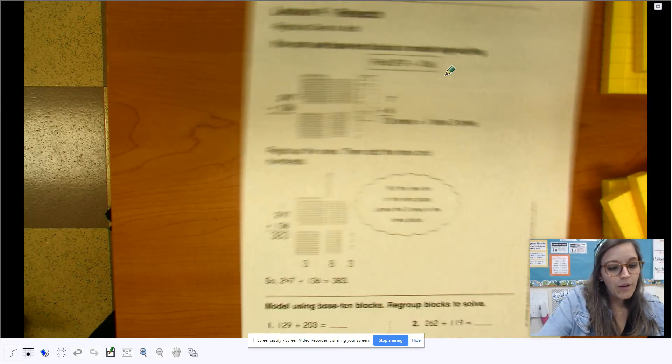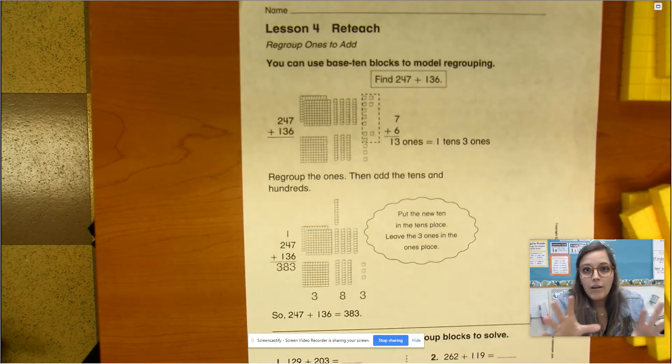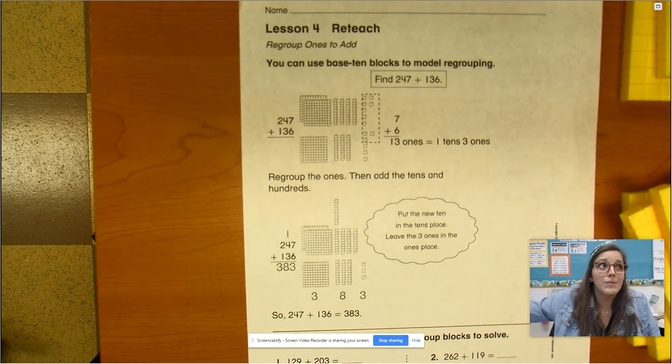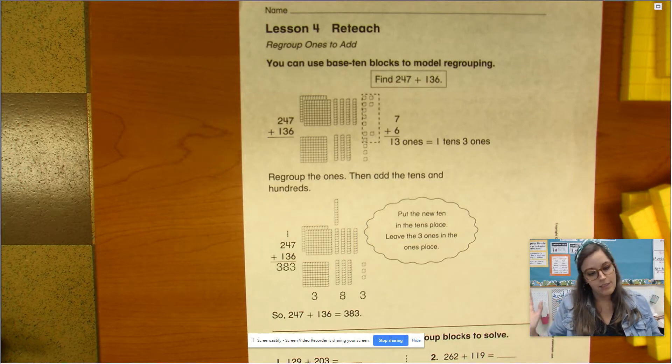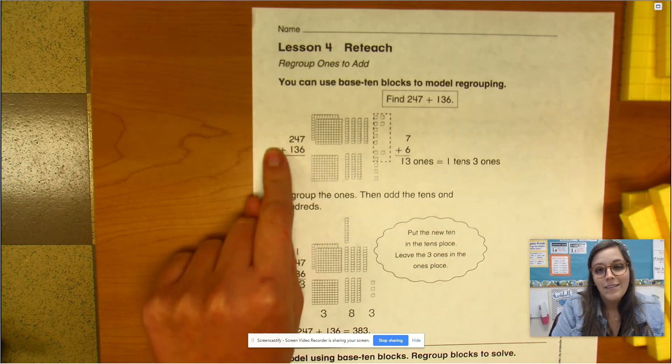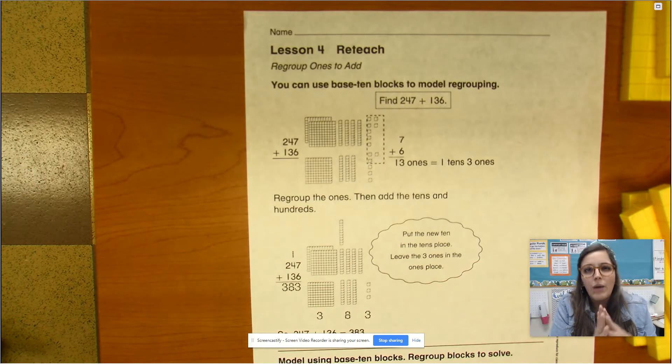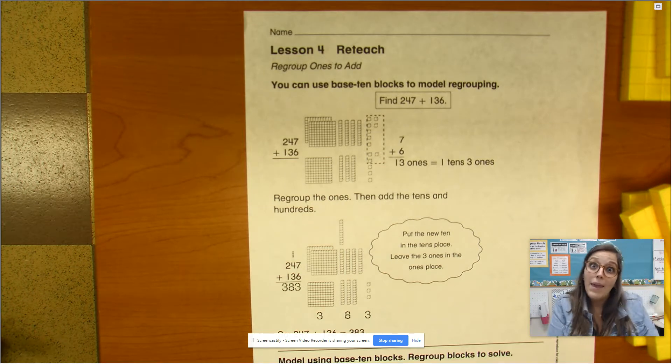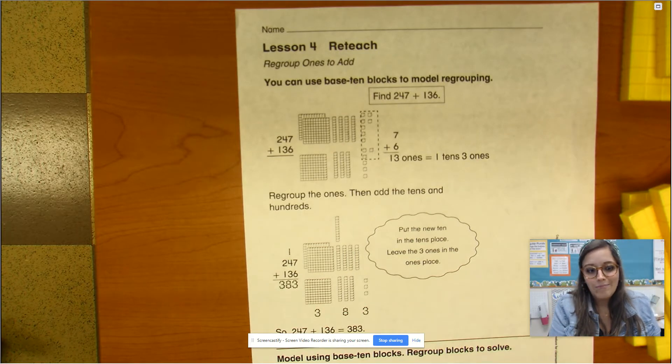All right, guys. So we are going to look at the next part of our process of starting to add bigger numbers, three-digit numbers, and then this will carry on into four-digit numbers and five-digit numbers and all these other really big numbers. So we're going to look at what happens whenever we are adding two numbers together that do not end in zeros because that's what we've been working on, right?